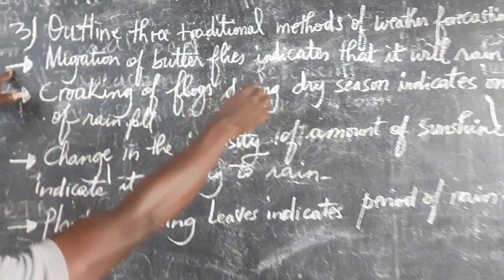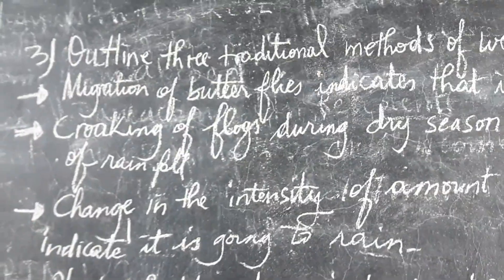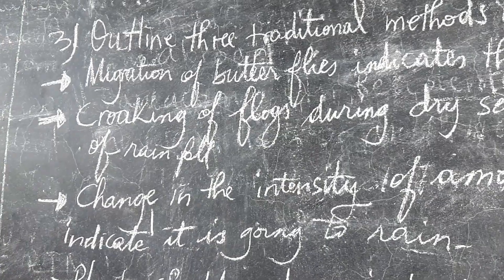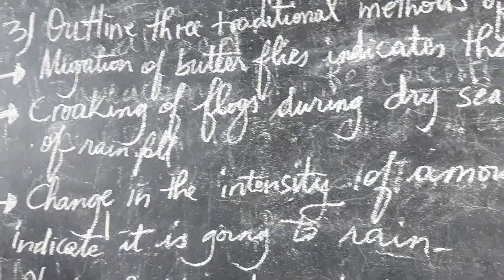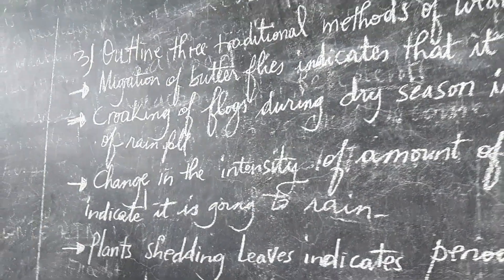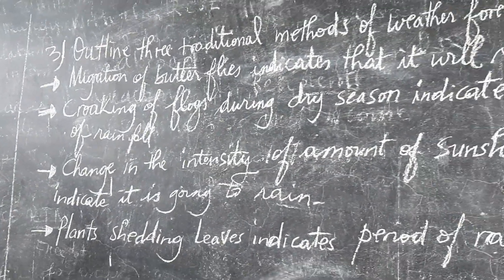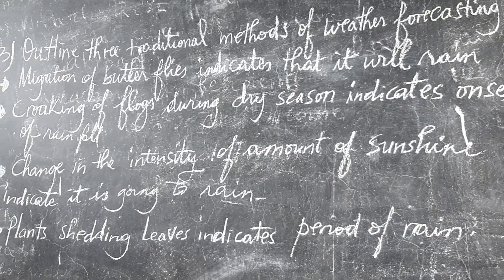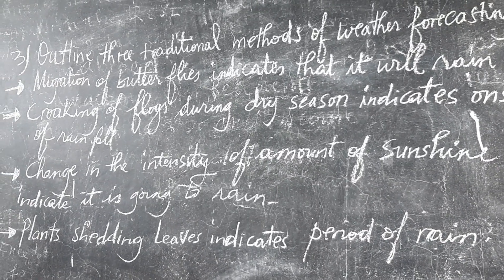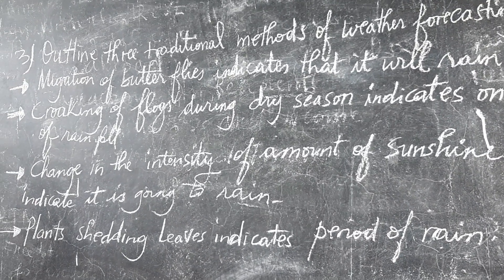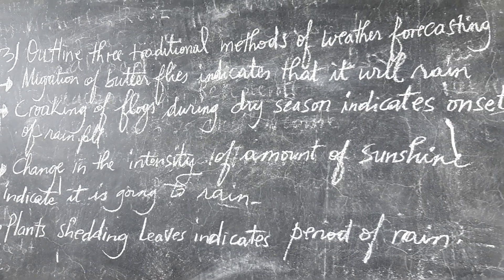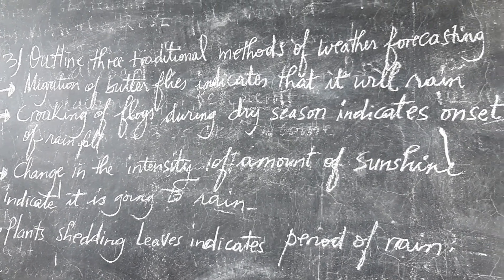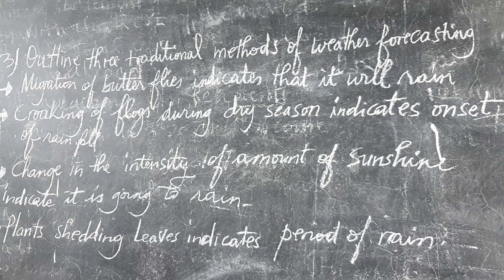Point number one: the migration of butterflies indicates it will rain. In the ancient time, when people observed butterflies migrating, that event indicated that rainfall was about to occur. So therefore, it is a traditional method of weather forecasting.